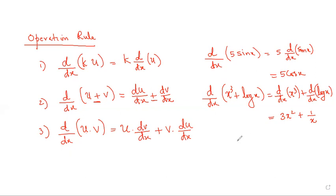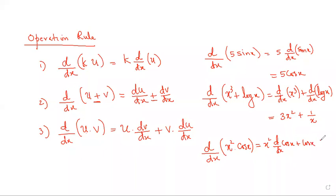So how will you find the derivative of x²·cos(x)? Keep x² as it is, derivative of cos(x) is −sin(x), plus cos(x) into derivative of x², which is 2x. So that is x²·(−sin x) + cos x·2x, giving: −x²·sin(x) + 2x·cos(x).